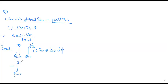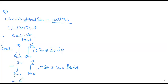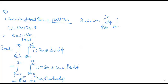Directivity = 4πUm / Prad, where power radiated = ∫₀^(2π)∫₀^(π/2) U·sinθ·dθ·dφ (unidirectional, so θ from 0 to π/2). Substituting U = Um·sinθ: Prad = ∫∫ Um·sinθ·sinθ·dθ·dφ. Be careful — almost everybody makes a mistake here: there is one sinθ from U and one more sinθ from the solid angle, giving sin²θ. So Prad = Um · ∫₀^(2π)dφ · ∫₀^(π/2) sin²θ·dθ.